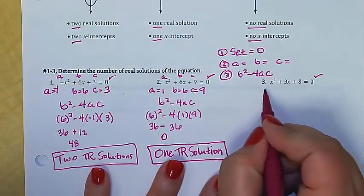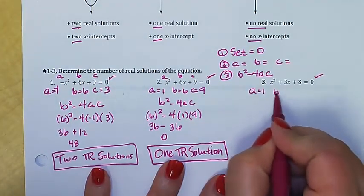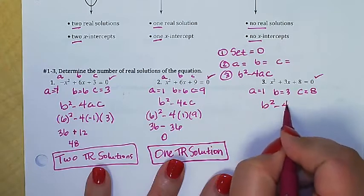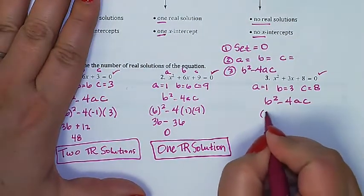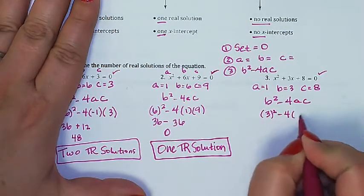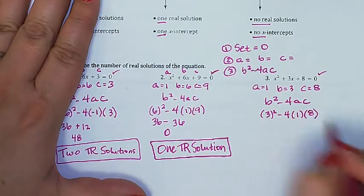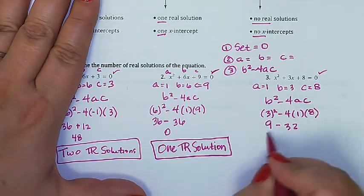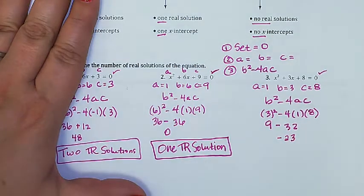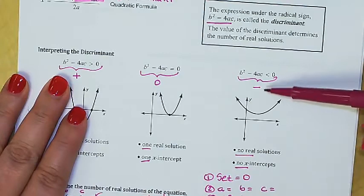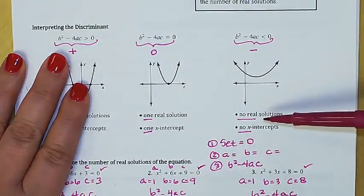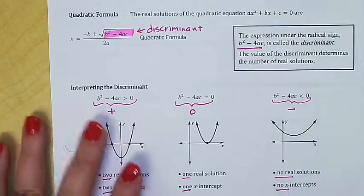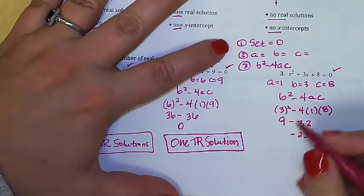Let's try one more. It's already equal to zero. Identify a, b, and c: a is one, b is three, and c is eight. Plugging into the discriminant: three squared minus four times one times eight. That's nine minus 32, which is negative 23. When the discriminant is a negative number, we have no real solutions, because the discriminant lives under the radical and we can't take the square root of a negative. So this has no real solutions.